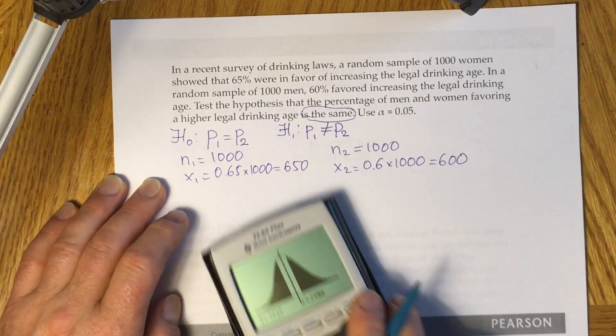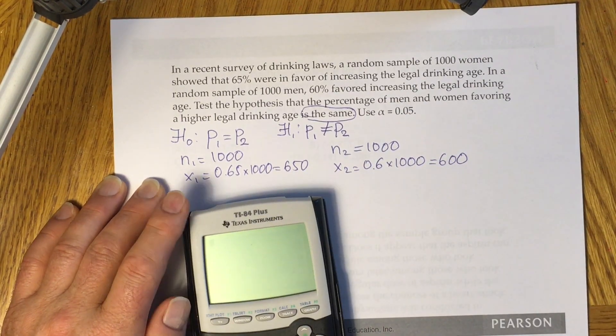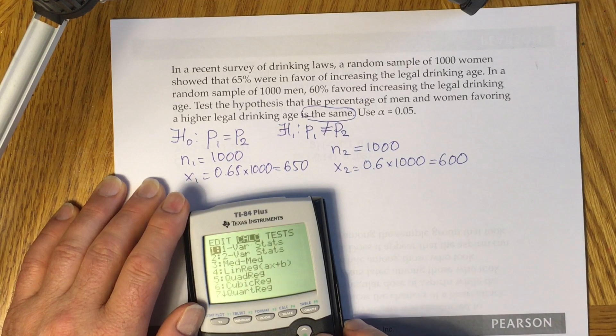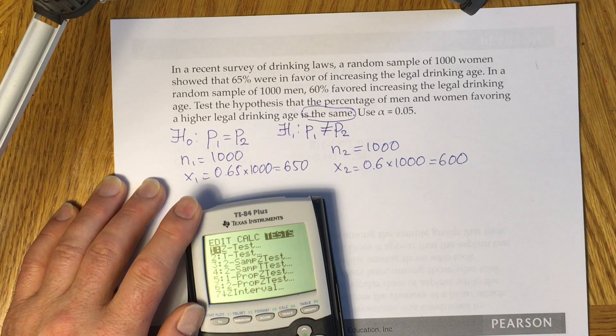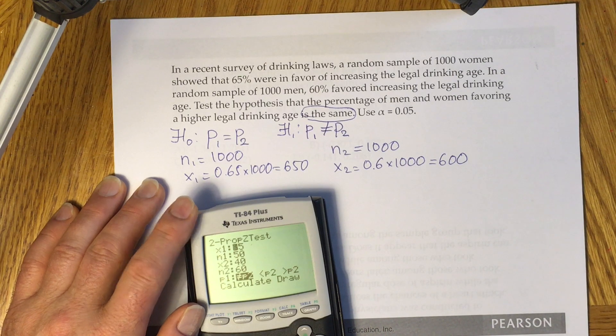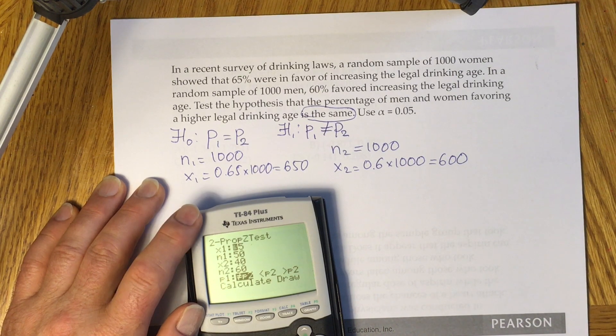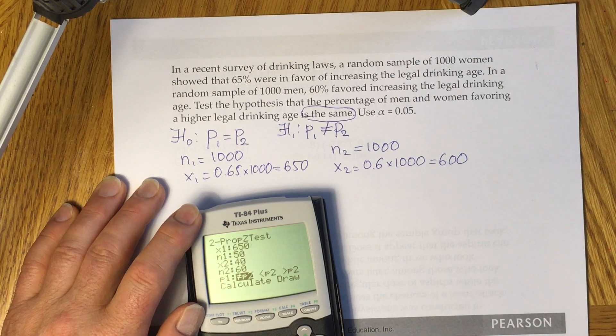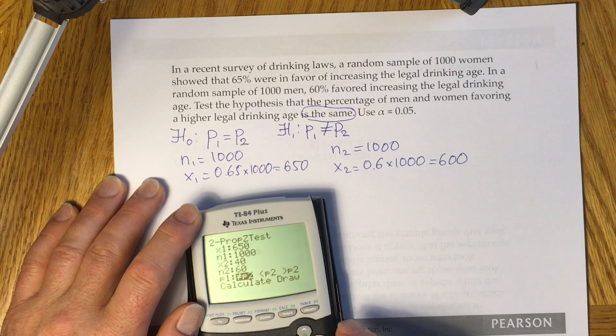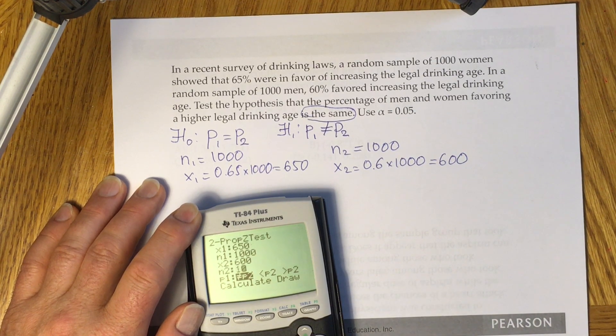After that you have to grab your calculator. You will click stat button, go to the tests and pick up option 6, 2-prop z-test. You will put your 650 as x1, 1,000 as n1, 600 as x2, and 1,000 as n2.